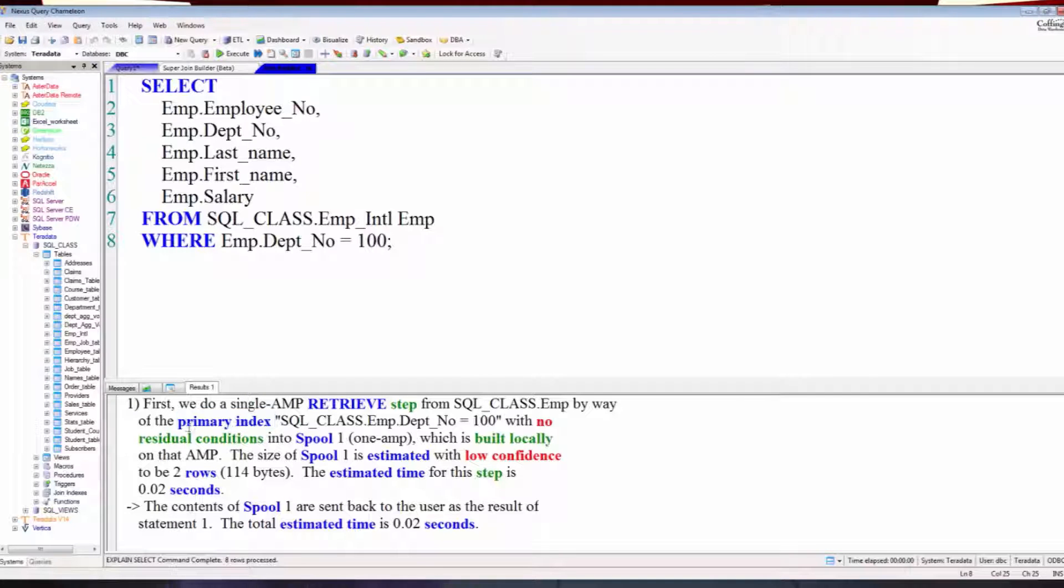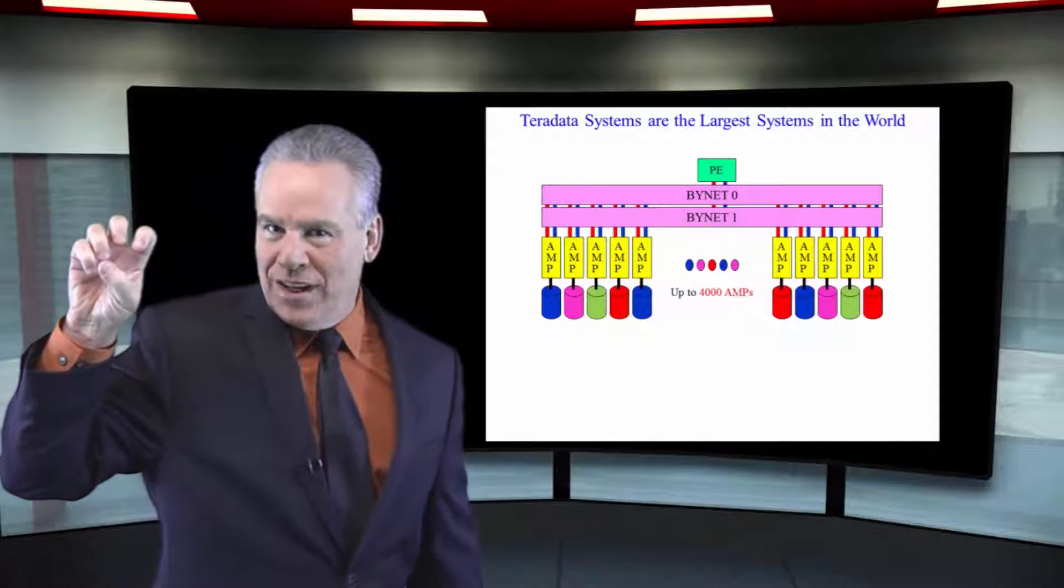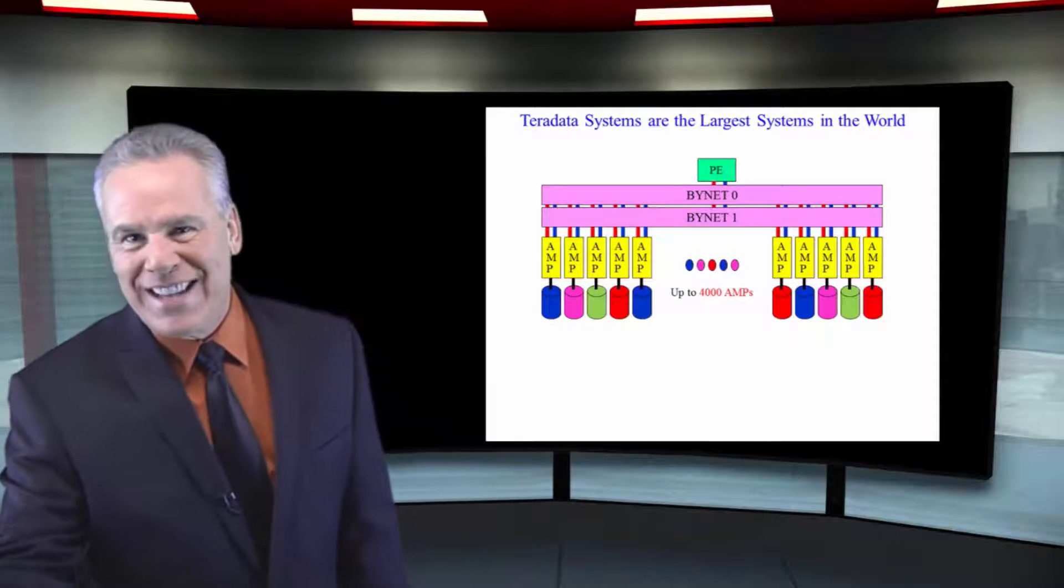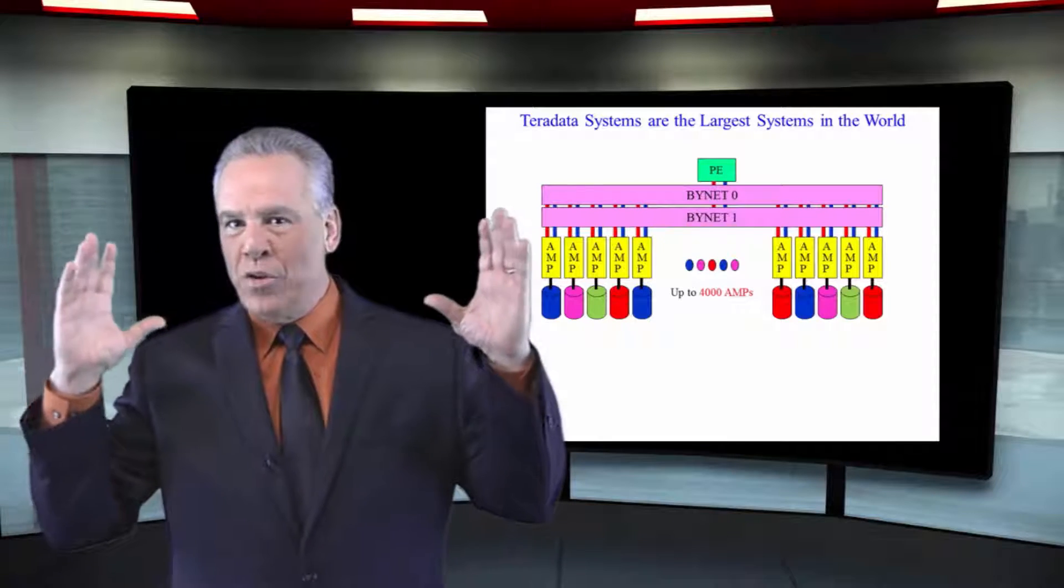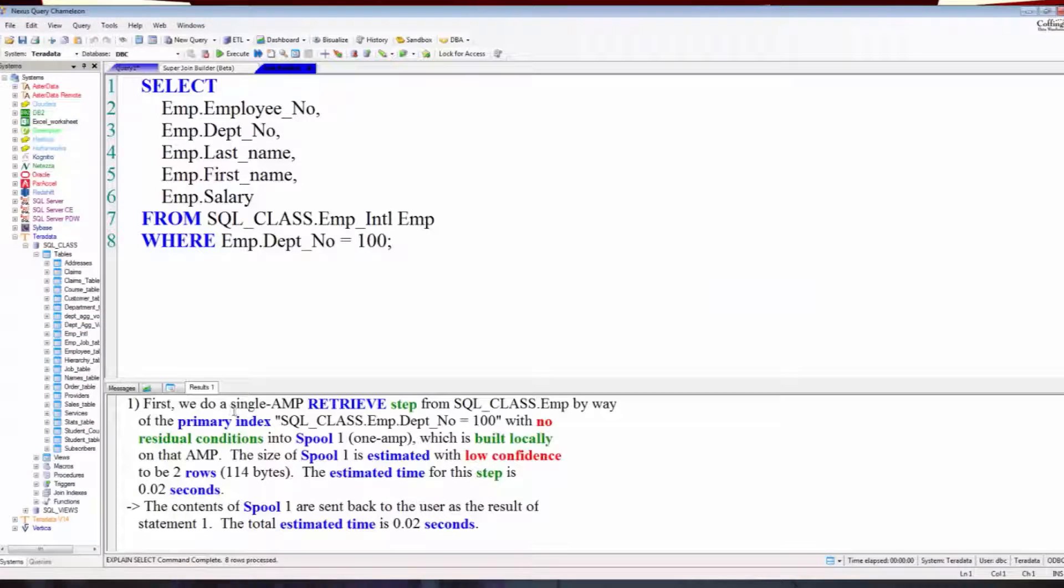Imagine a system with thousands of AMPs and yet only one is contacted by the parsing engine because it laid it out with the math formula. It knows where it's at and that's really one of the most clever designs about Teradata. Massively parallel processing but can grab a row or multiple rows in under a second no matter how large the data is.